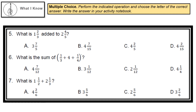Number 6: What is the sum of 1/3 plus 4 plus 1/4? A. 4 and 7/12, B. 3 and 1/12, C. 2 and 1/12, or D. 4 and 1/4.